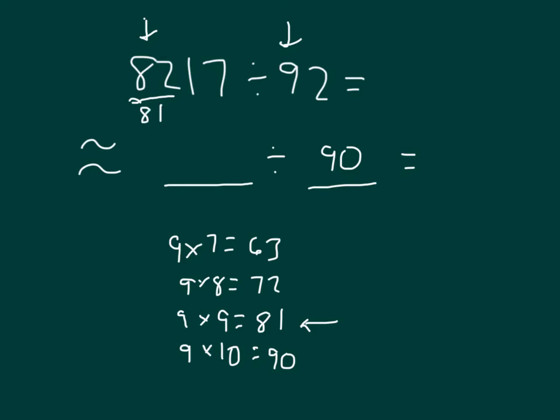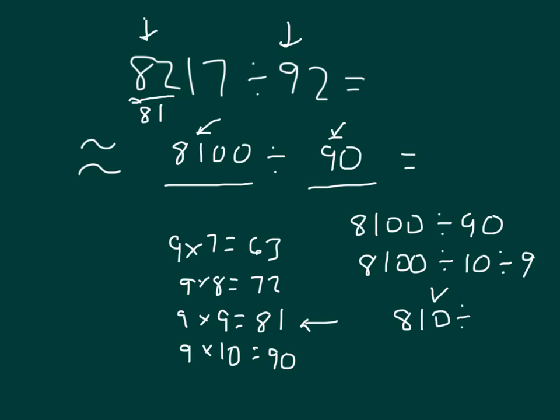81 what? This is 81 hundreds. And so 8,100 is still close to 8,217. Still looking at that basic fact, we've got 81 divided by 9, which is 9. We just have to figure out still how many zeros there are going to be within our estimated quotient. And so we follow through with our steps. 8,100 divided by 10 divided by 9. 8,100 divided by 10 is 810. And we divide that by 9 using our basic fact that we know there. That would be 90. So our estimated quotient is 90.